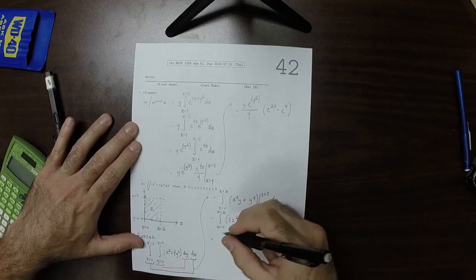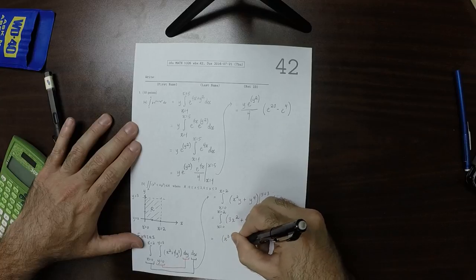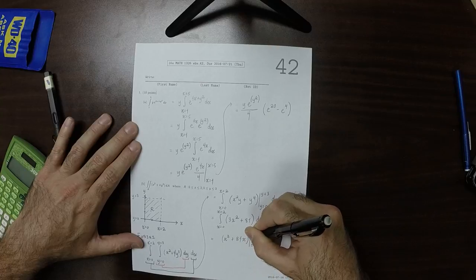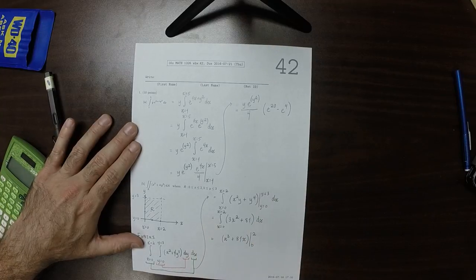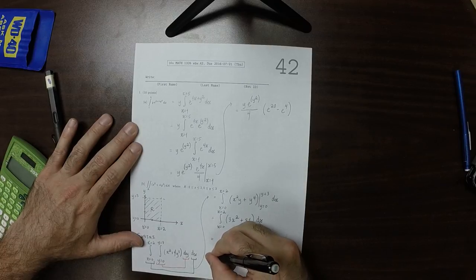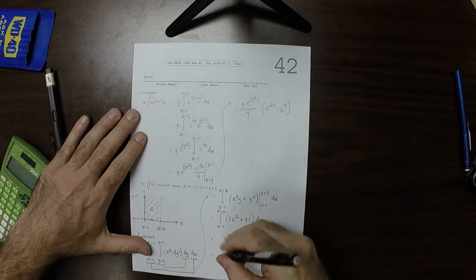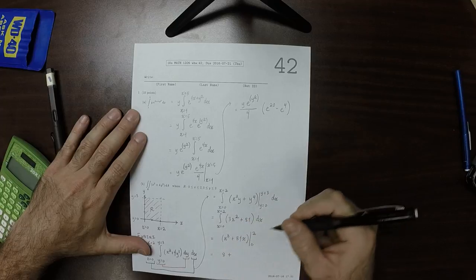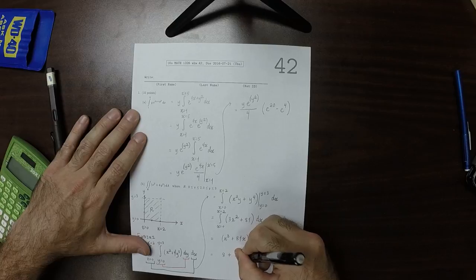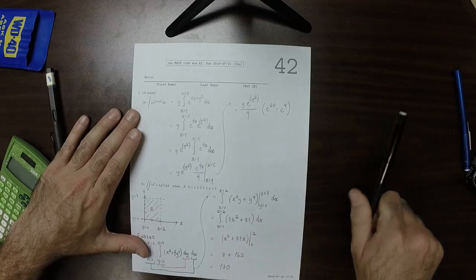and so, we can use the fundamental theorem on this integral. That would be x cubed plus 81x, evaluated from 0 to 2. So, I drop the x equal because I'm not in danger of confusing which variable is which because there's only 1 now. Conveniently, one of the evaluation spots is 0. So, this would be 8, which is 2 cubed, plus 162, 81 times 2, which is 170. And that's the answer.